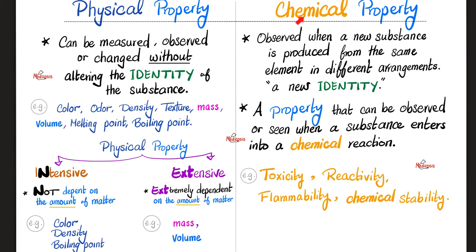A physical property versus a chemical property. A physical property can be measured, observed, or even changed without altering the identity of the substance. If you give me one bottle of water, it is colorless. Two bottles of water — still colorless. Five bottles — colorless. A big bottle — still colorless. These physical properties will not alter the identity of the substance. I can remove the water from the bottle and pour it into a glass — it's still the same water, the identity was not altered.